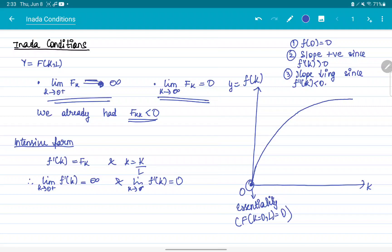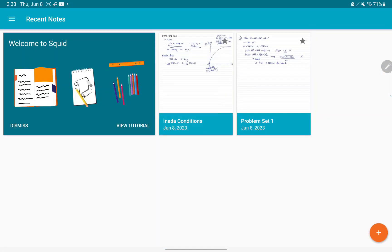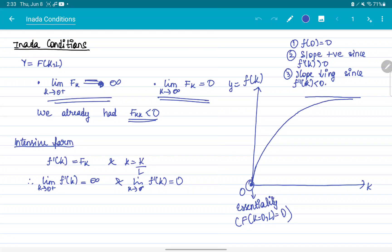And slope is decreasing since f double dash k is negative. And you can see that asymptotically, the slope is becoming 0. And at the beginning, the slope is basically tending to infinity. So I just wanted to add this to our discussion of the intensive form production function earlier.